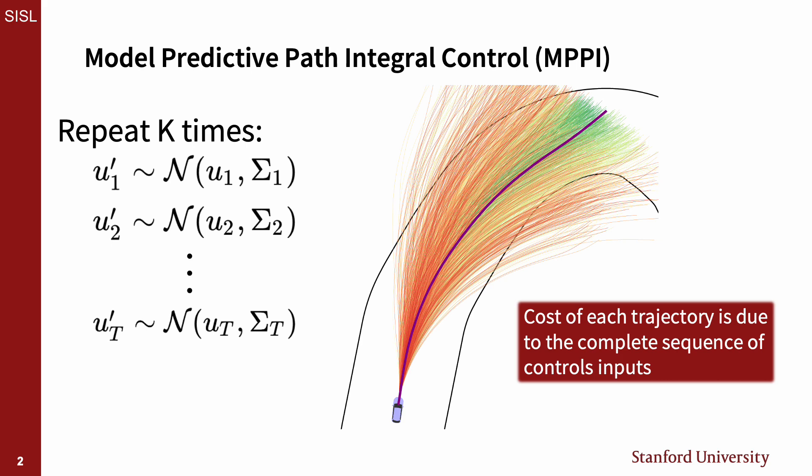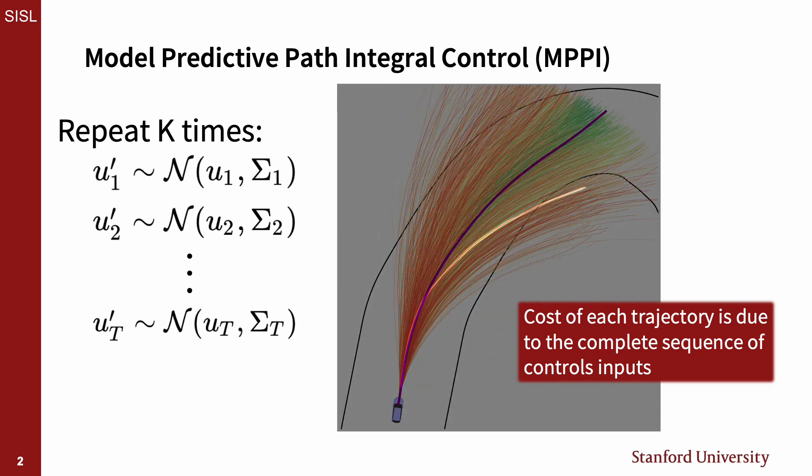The cost of each trajectory is dependent on the whole control sequence. Consider a trajectory where the car runs off the track due to subsequent right turns. However, right-steer inputs near the beginning, followed by a series of left-steering inputs could have resulted in a lower-cost trajectory.